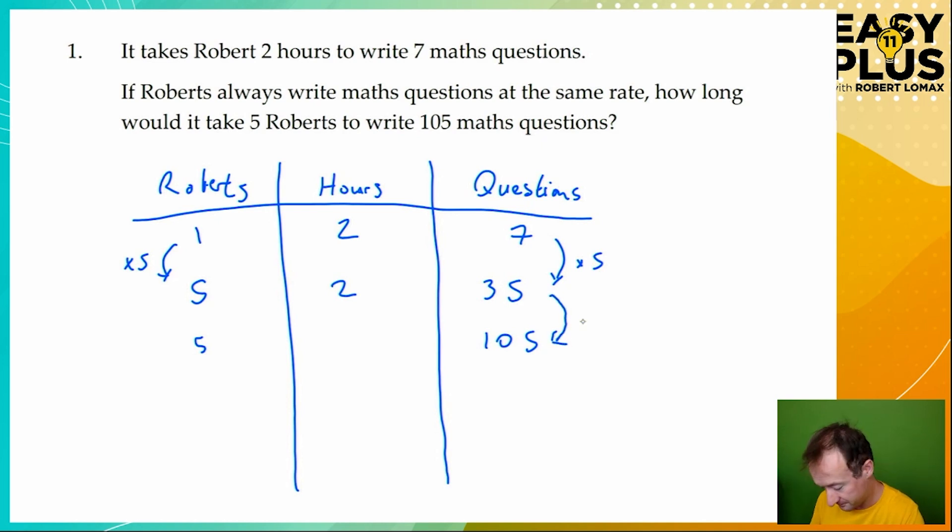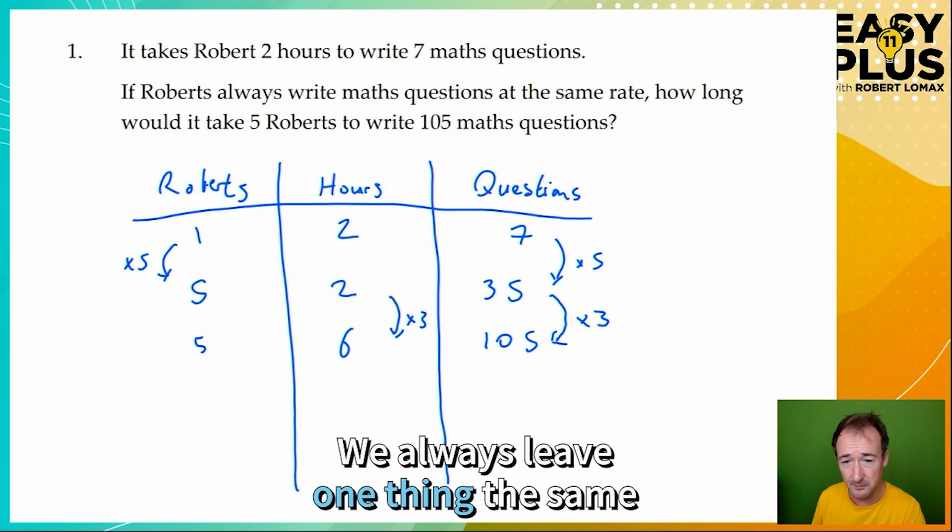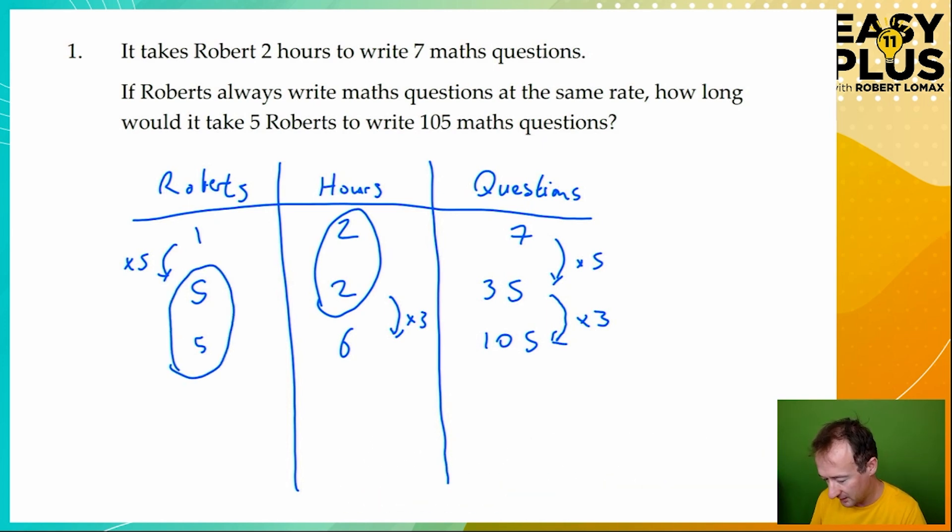But we need 105 maths questions. So we've still got five Roberts, but we've got 105 questions that they write. So what have we done to 35 to get to 105? Well, we've timesed it by three. And if they need to write three times as many questions, but you've got the same number of Roberts, it's going to take them three times as long. Three times two is six.